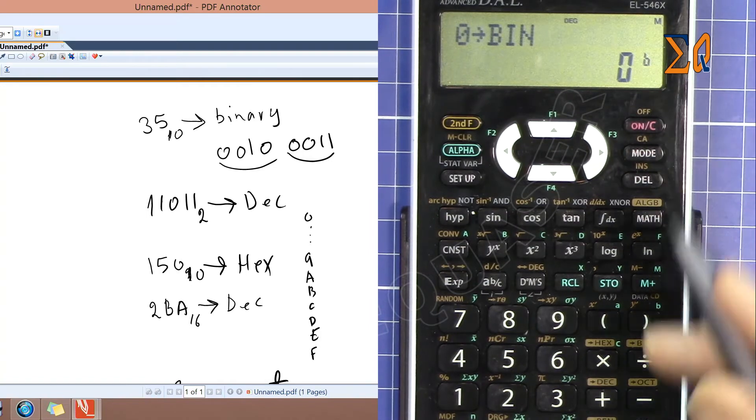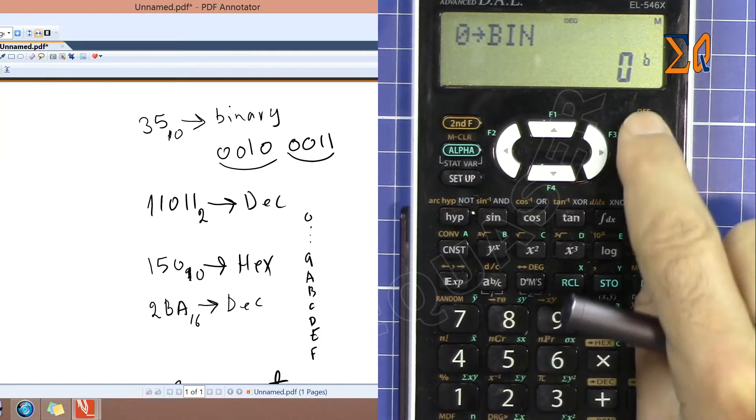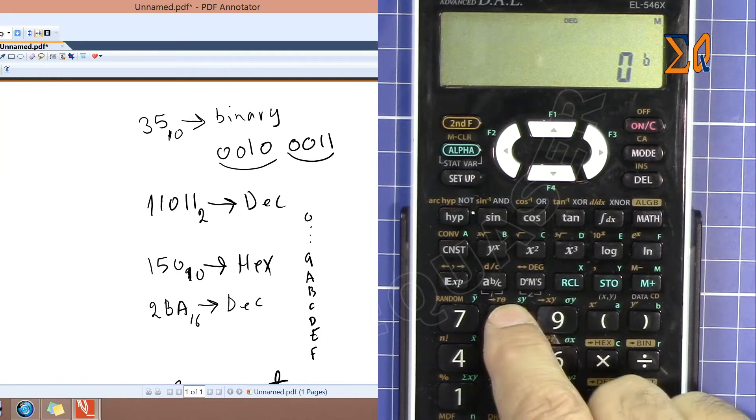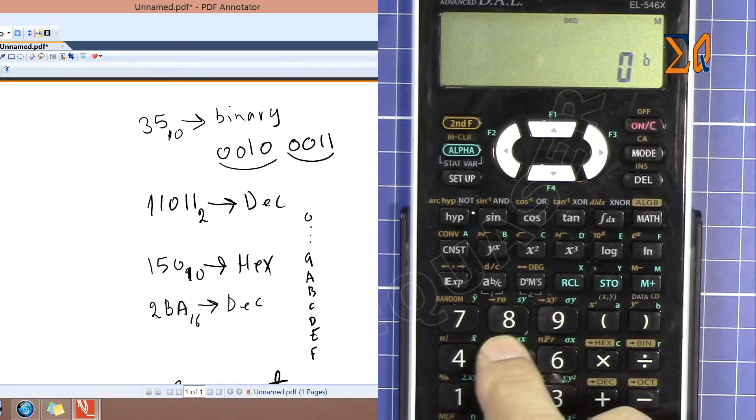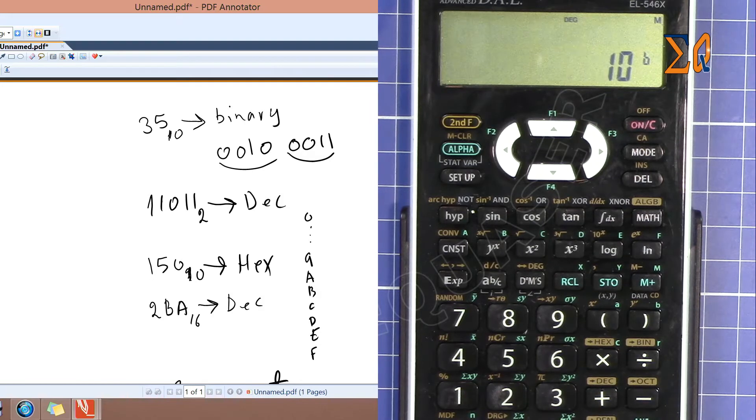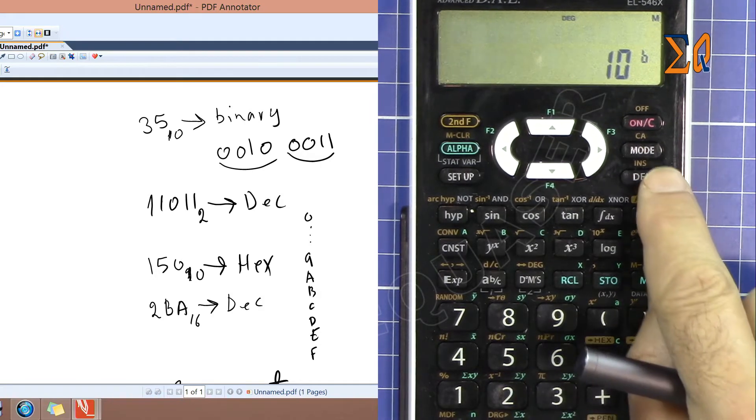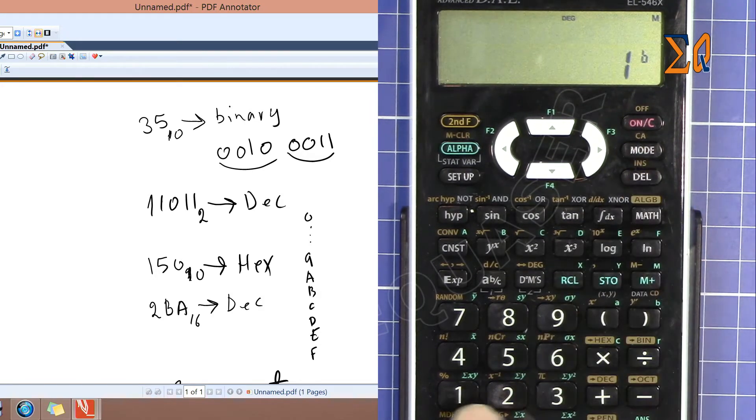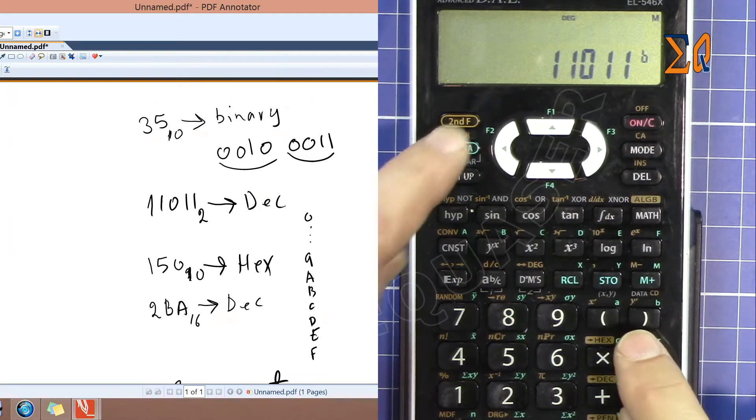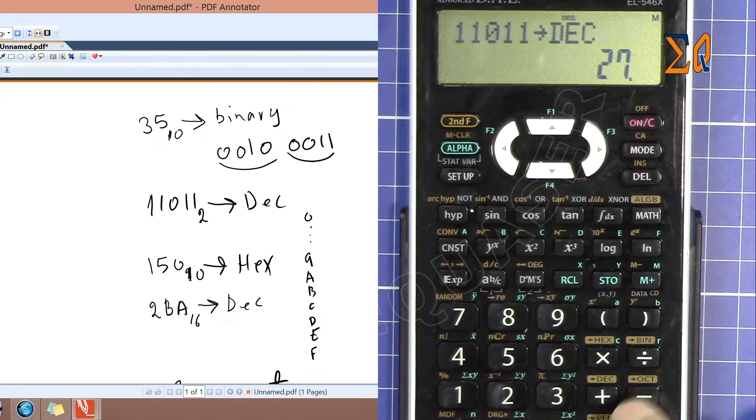Once you are in binary, the eight, nine, and five are all disabled because binary accepts only one and zero. Now let me enter it: one one zero one one. That's my binary. Hit second function and then decimal. So we got 27.